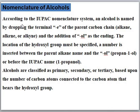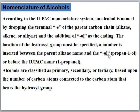Now, the nomenclature of alcohols. According to the International Union of Pure and Applied Chemistry (IUPAC), an alcohol is named by dropping the terminal 'e' of the parent chain — alkane, alkene, or alkyne — with the addition of '-ol'. Simply, they are named as alkanol, alkenol, or alkynol. The location of the hydroxyl group must be specified. A number is inserted between the parent alkane name and '-ol', such as propan-1-ol, or before the IUPAC name, as 1-propanol.